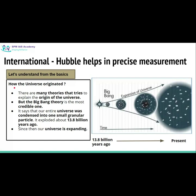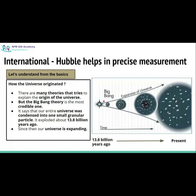First, we need to briefly understand how our universe has originated. The most acceptable and credible theory regarding the origin of the universe is the Big Bang Theory. This theory says that our entire universe was condensed into one small granular particle approximately 13.8 billion years ago. That small particle exploded, and this explosion is known as the Big Bang. Because of the Big Bang, this small particle was divided into so many other small particles, and since then all those particles have been expanding.